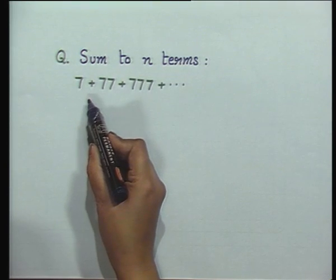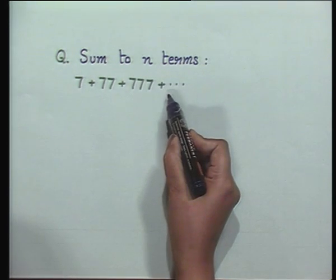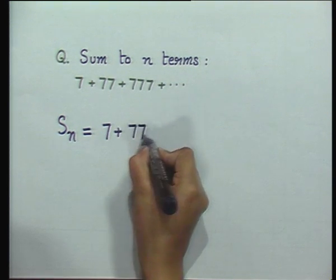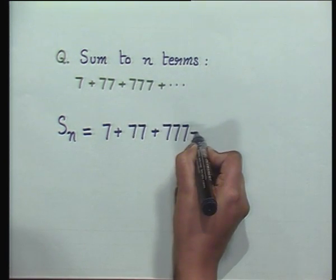Consider the series 7 + 77 + 777. Since we want the sum to n terms, let Sn = 7 + 77 + 777 and so on. We do not need to write the last term explicitly, though the nth term is 7 written n times. We just remind ourselves that we are adding n terms. Step 1: rewrite by taking 7 common, which is quite apparent. Then, to get what we want, we multiply and divide by 9.